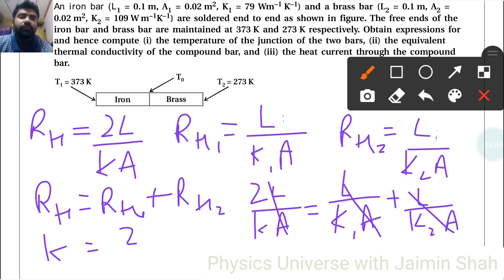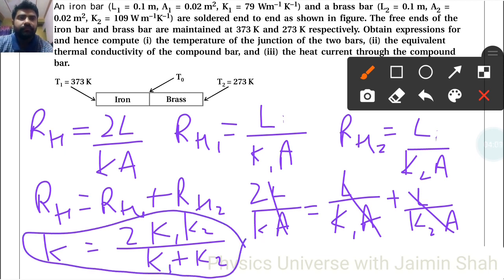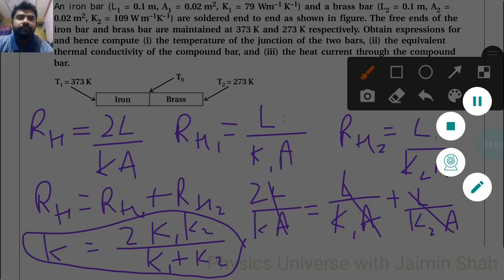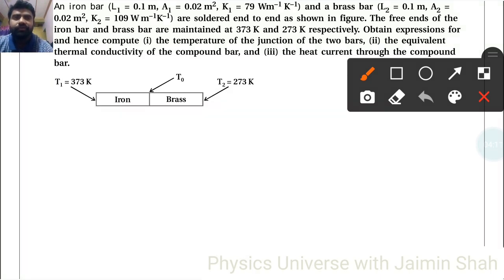So we are left with K is equal to 2K1 K2 upon K1 plus K2. So this formula is to find K, called compound thermal conductivity. And now third question, the heat current through the compound, so heat current formula H is equal to KA (T1 minus T2) upon 2L.